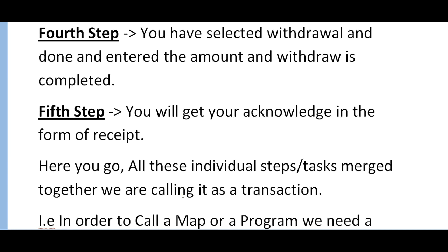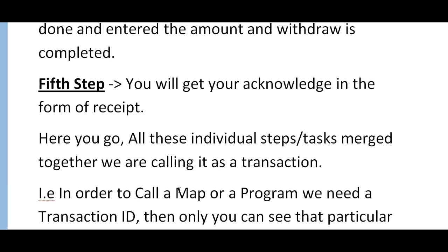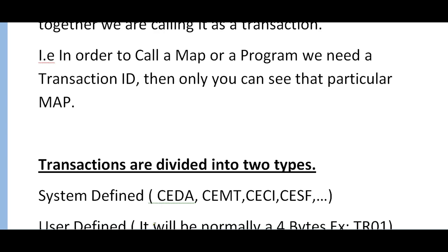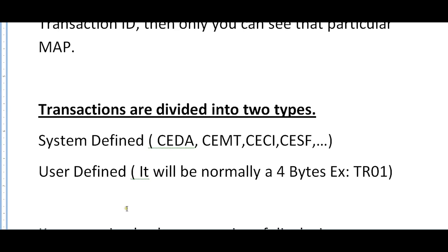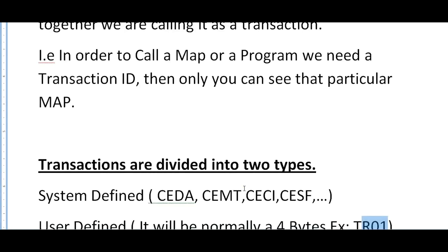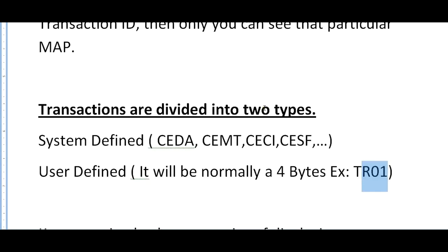All these tasks together are called a transaction. In the same way, in order to call a map or a program, we need to have a transaction ID defined — only then can you see that map or initiate that transaction. Transactions are divided into two types: system-defined and user-defined. System-defined examples are CESN, CEMT, CECI, CESF — all four bytes. User-defined transactions are also four bytes; for example, I can define my own transaction as TRZ01.